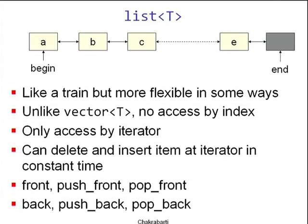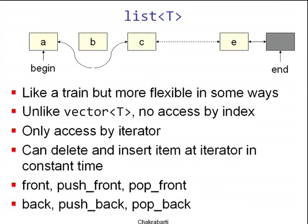Your only access to list is by iterator. But compared to vectors, once you are at a position you can delete or insert a new element at constant cost. To delete element B: you cut those two links and short-circuit A to C — B is now inaccessible. The list<T> implementation is in charge of releasing the space. To insert D between C and E: you snip that link and link in D. Creating entries anywhere in a list, once you have an iterator positioned suitably, is very easy.